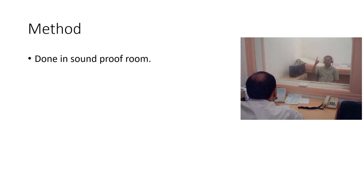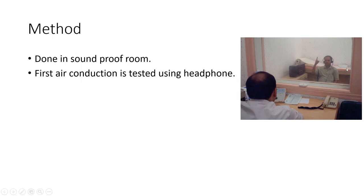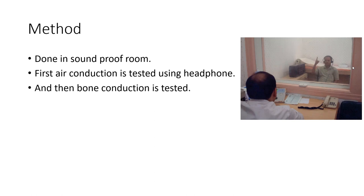Pure tone audiometry is done in a soundproof room. Inside the soundproof room we have the patient, and the examiner is outside, separated by a transparent glass so the examiner can see the patient. However, if the patient can see the examiner, he may get an idea when the examiner is pressing the audiometer button, which can create bias in the results. So we ask the patient to look in the other direction, and he raises his hand only when he actually hears the sound. First, we test for air conduction using headphones, and then bone conduction using an oscillator over the mastoid process.